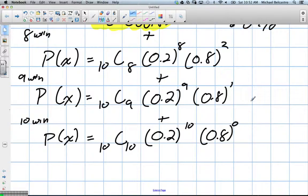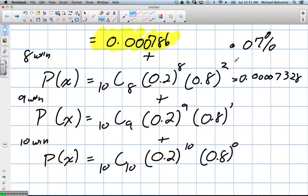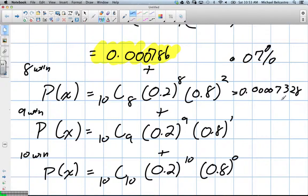I'm going to do the 8 here. So 10 combination 8 times 0.2 to the power of 8 times 0.8 to the power of 2. So we've got a very small decimal again. 0.000732. And if we look at it, it's actually really similar to our last one. And we've just increased by one decimal place.